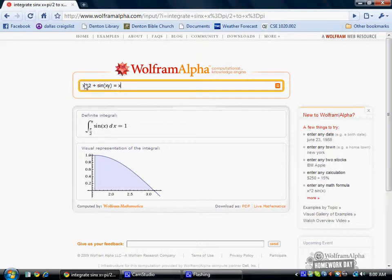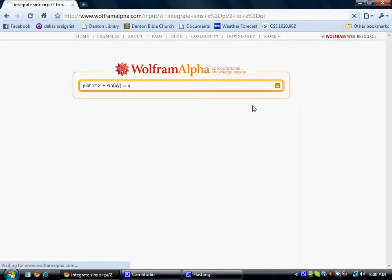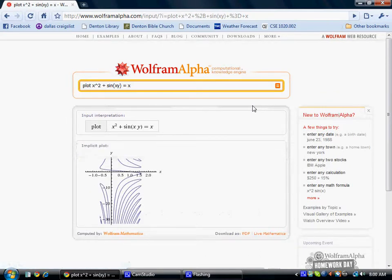WolframAlpha is not this way. I simply say plot before this and hit the equals sign. You'll see it thinks for a little while and it will give you a plot of x squared plus sine xy equals x. This is an implicit plot on the xy axis.